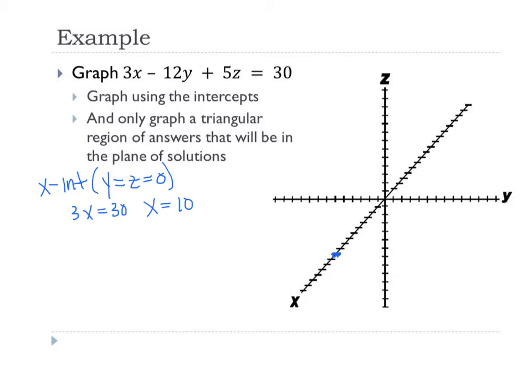Okay, and then we're going to find our y-intercept. Well, at our y-intercept, x and z are both zero. So that's going to be -12y = 30. y equals -15/6, which is negative, let's see, -5/2. So on the y-axis, -5/2.